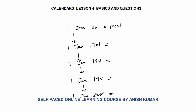Hello, this is calendars4. In this, I will continue with basics and questions on calendars. Now, if 1st January 1601 is actually Monday, what will be the day on 1st January 1701?